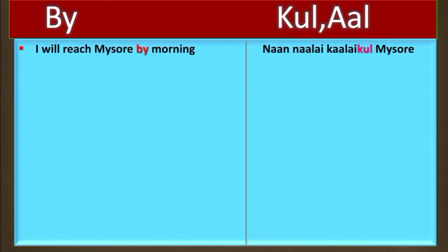The first example is: 'I will reach Mysore by morning.' In Tamil: Naan nalai kalaikul Mysore sindru adaiven. Naan means I, nalai means tomorrow, kalaikul means 'by morning', and sindru adaiven means 'will reach Mysore'.